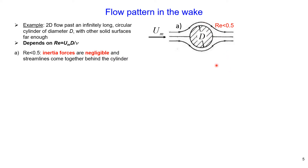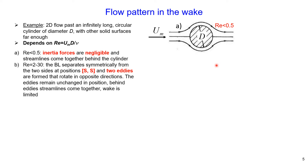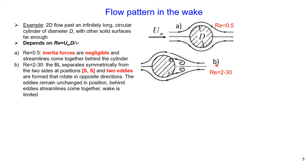With increasing Reynolds number, somewhere between 2 and 30, the boundary layer separates symmetrically from two sides at positions called separation points. Two eddies form behind the cylinder, rotating in opposite directions. These eddies remain unchanged in position, and behind them the streamlines come together so the wake region is limited.